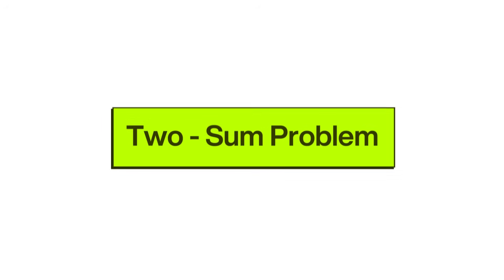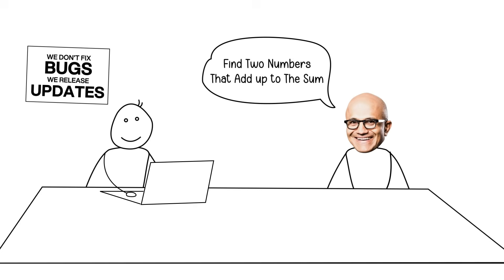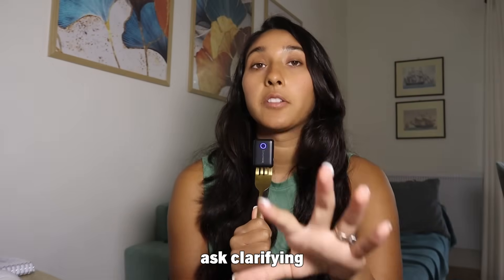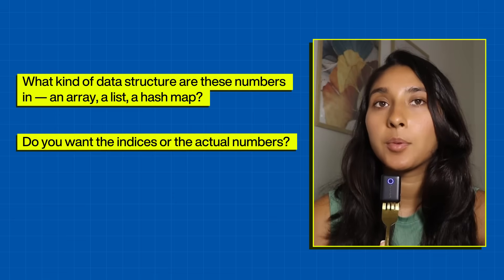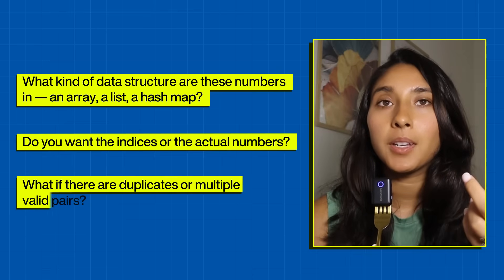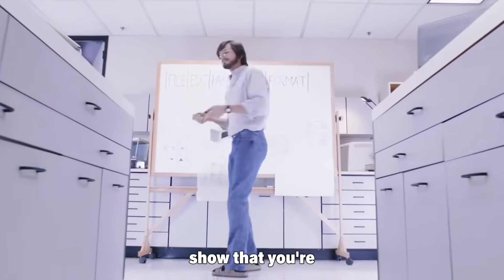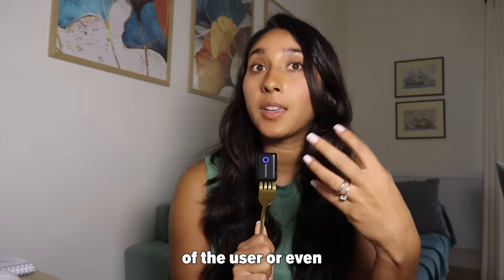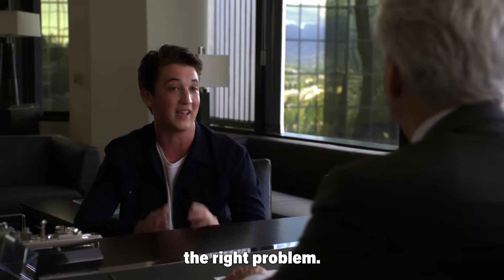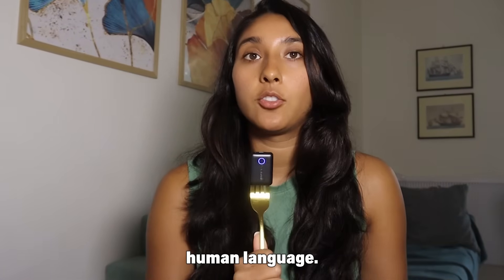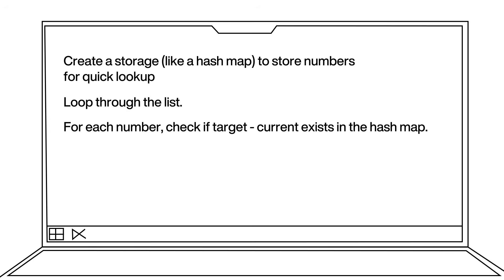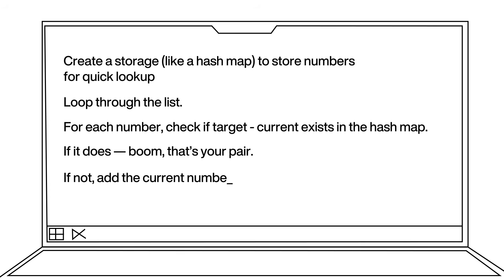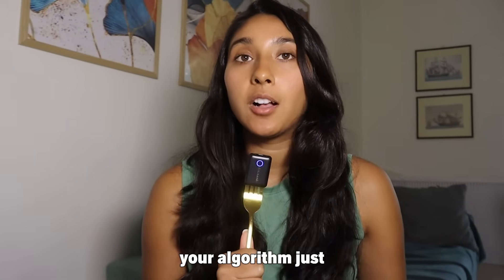For example, take the two-sum problem. The interviewer says: find two numbers that add up to a sum. Sounds simple, right? But you can't just start typing — you need to ask clarifying questions. What kind of data structure are these numbers in — an array, a list, a hash map? Do you want me to return the indices or the numbers themselves? What if there are duplicates or multiple valid pairs? Those questions show you're thinking like a teammate. Once you've clarified everything, write everything out in human language: create a hash map to store numbers for quick lookup, then loop through the list. For each number, check if target minus the current value exists in the hash map. If it does, that's your pair. If it doesn't, add that number to the hash map and continue iterating. You've described your algorithm just like a human would.